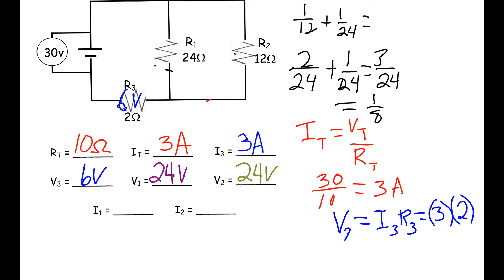Then we have I1. I1 is going to be equal to V1 divided by R1. V1 is equal to 24, so that gives us 1 amp.